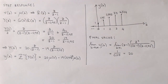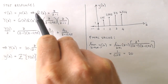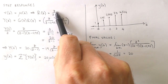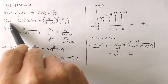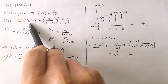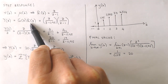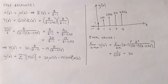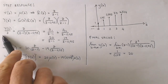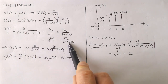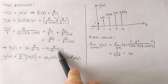We can also use the transfer function to calculate the output of a system for a specified input. Applying a unit step input, the z-transform of the input is z over z minus one. The z-transform of the output is the transfer function multiplied by the z-transform of the input. To find the time domain output we apply the inverse z-transform: dividing by z, performing partial fraction expansion, and then multiplying by z again.